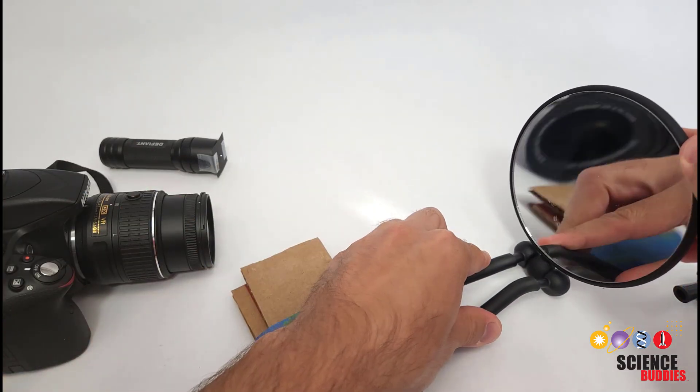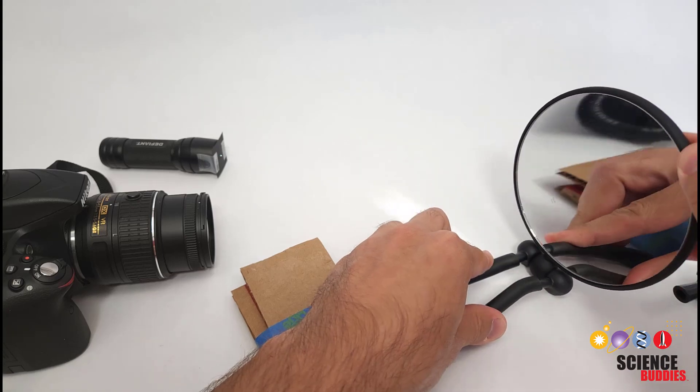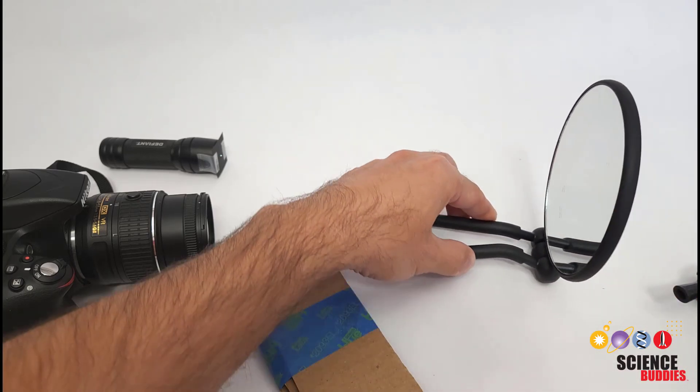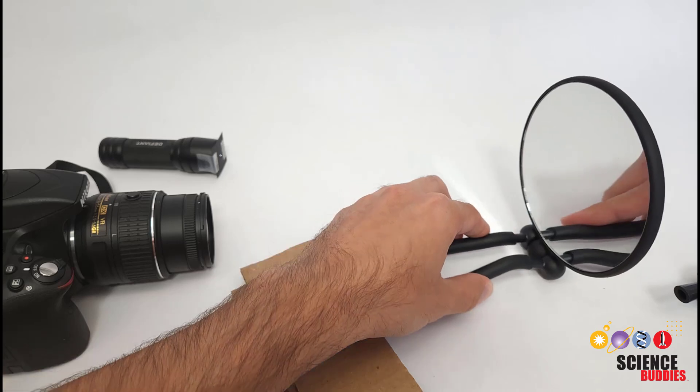Some mirrors, like this makeup mirror, also have a built-in stand that allows me to tilt it to aim it up and down, and I can just rotate it to aim it left or right.